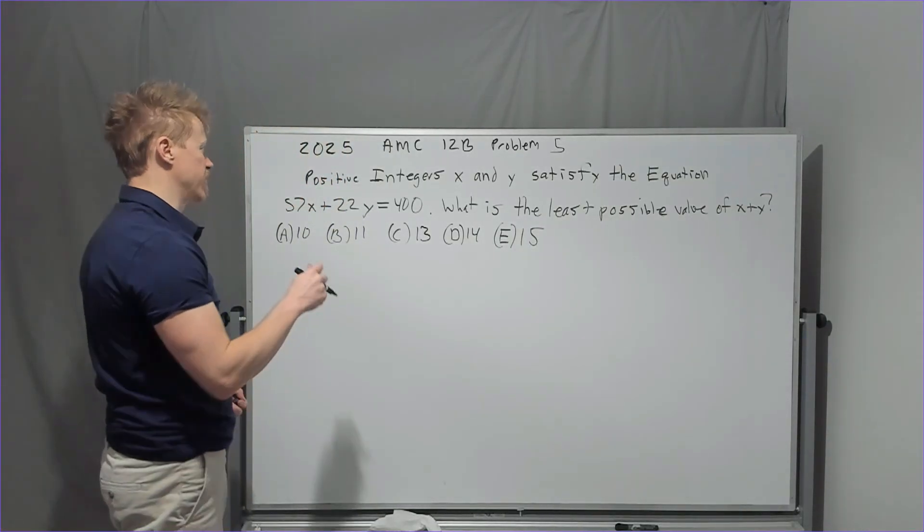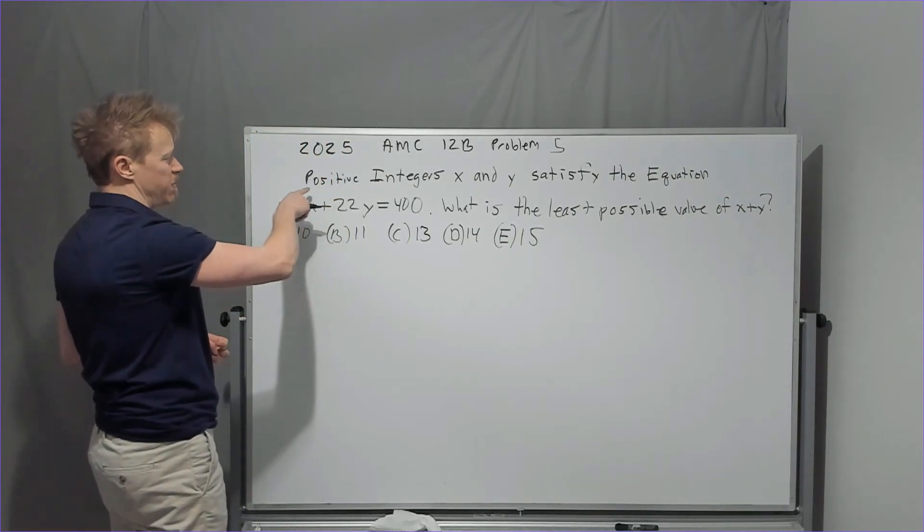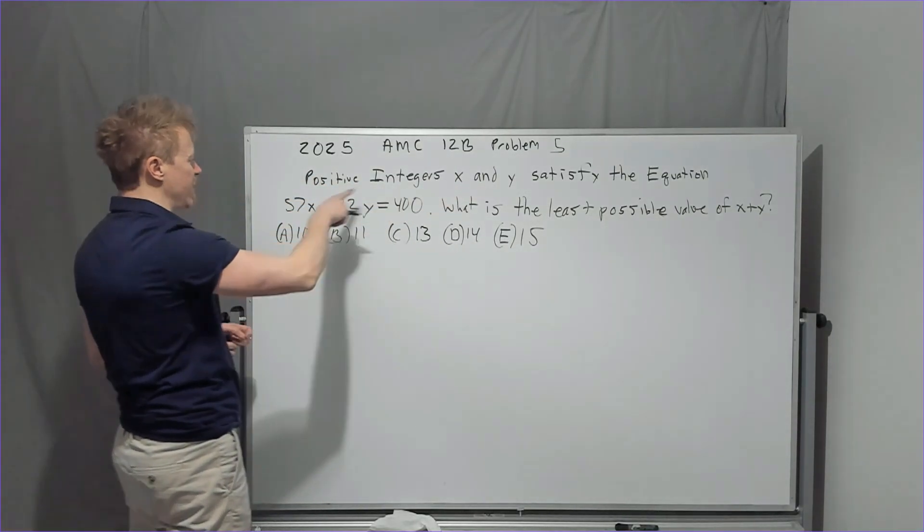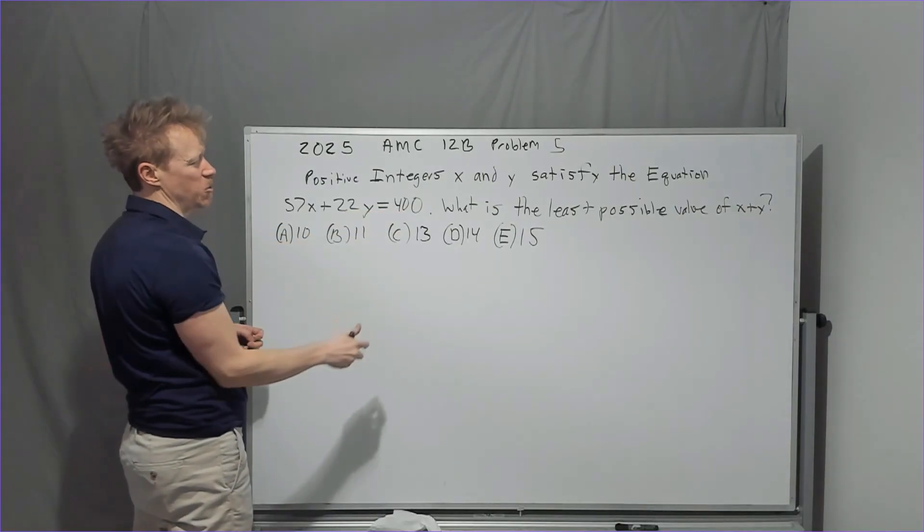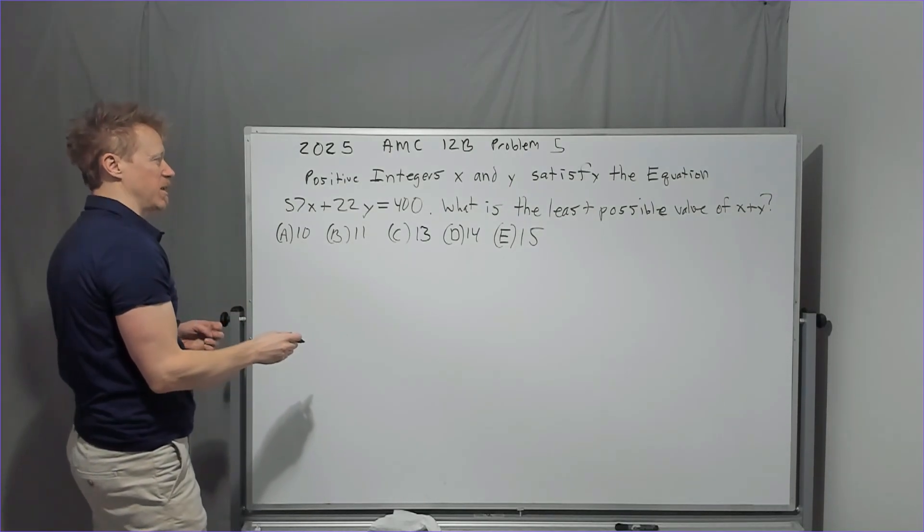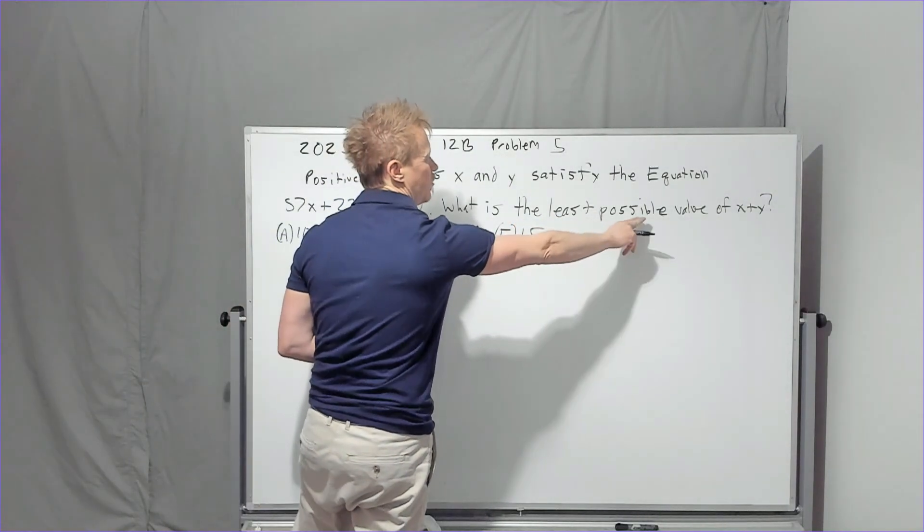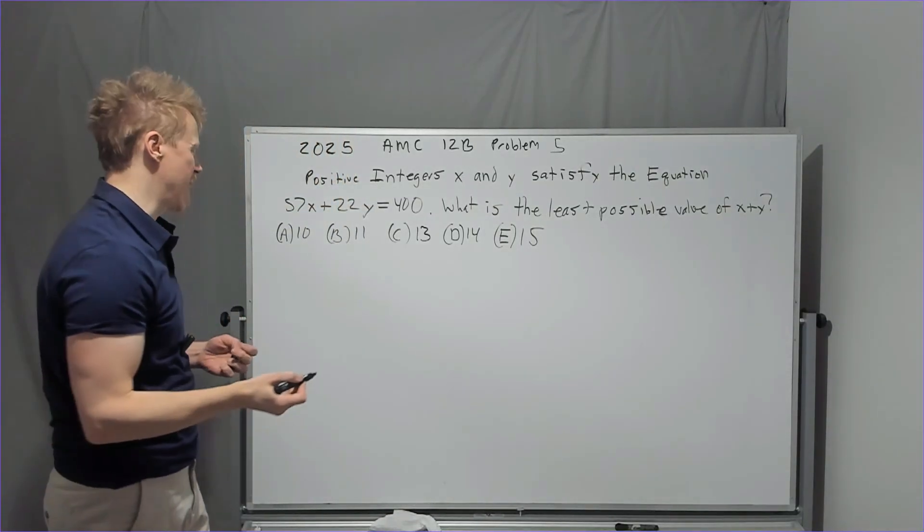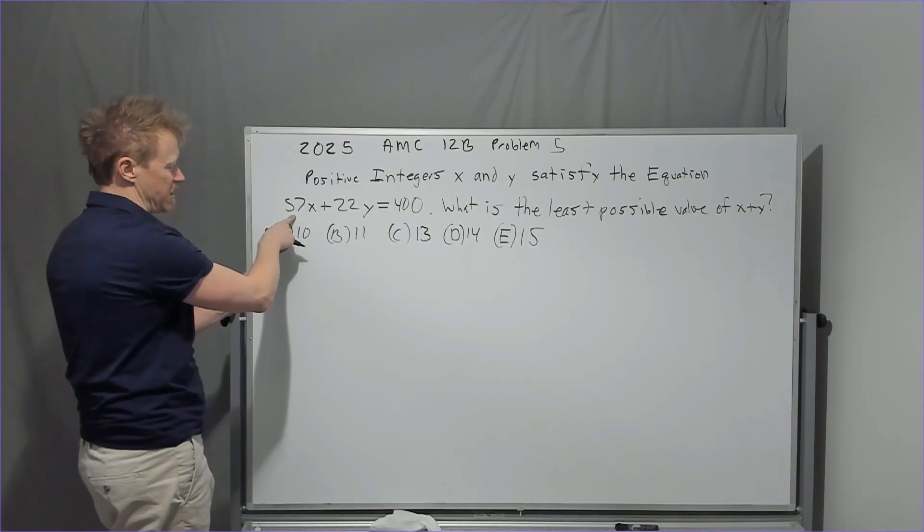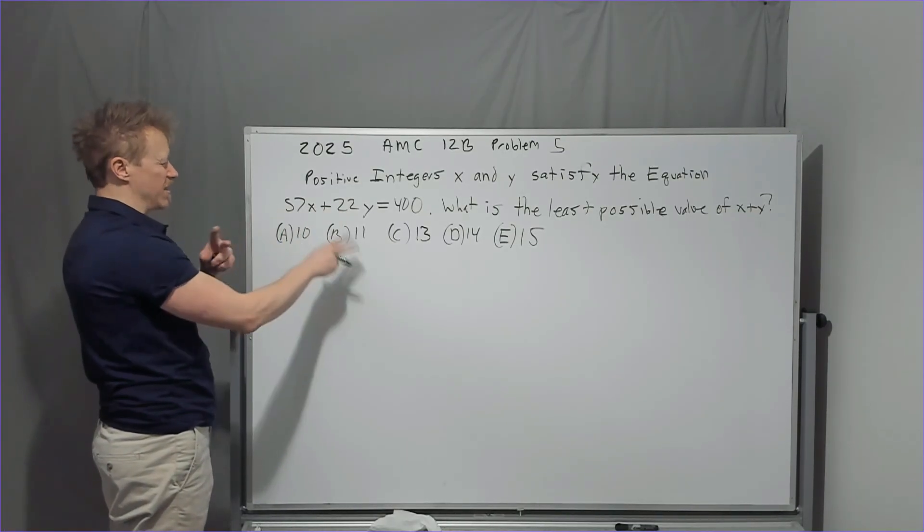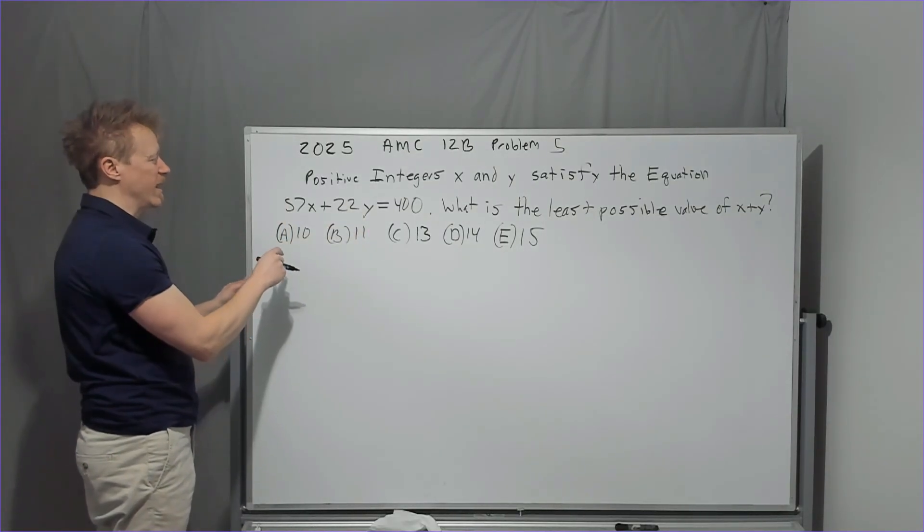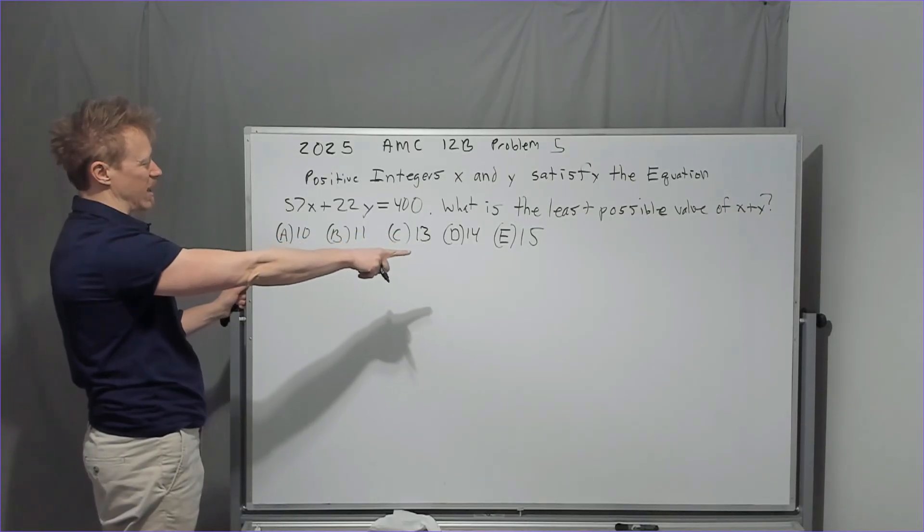And the final problem of this rapid fire set, 12B problem 5, positive integers from 2025. X and Y satisfy the equation 57X plus 22Y equals 400. What is the least possible value of X plus Y? They do sometimes put language like this when it doesn't really matter. So let's just kind of get a look at what happens here. 57 is 19 and 3. 22 is 11 and 2. Neither of those are in common. We can't really play a game of factorization or anything like that, at least not at this point.